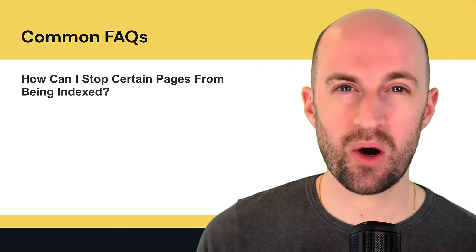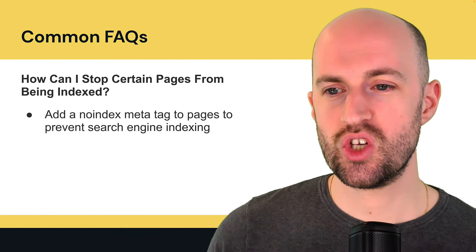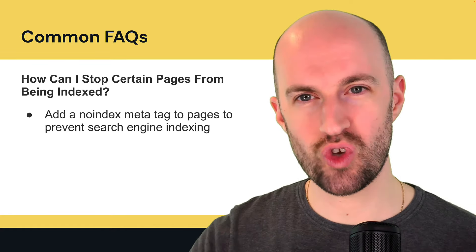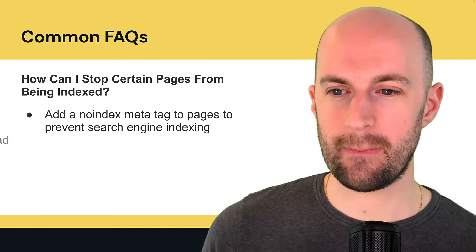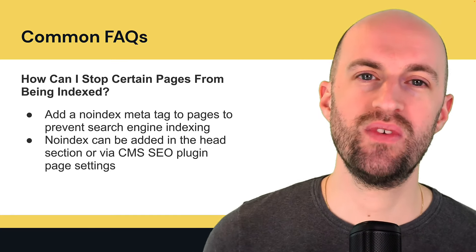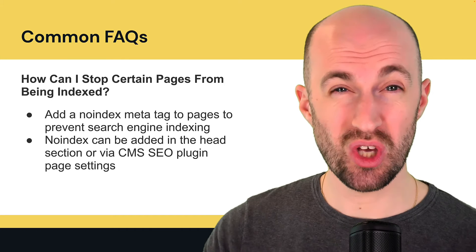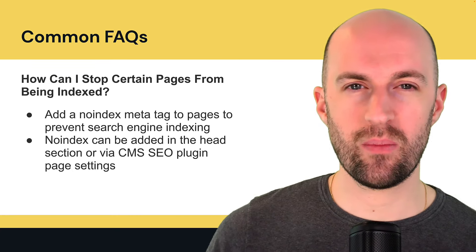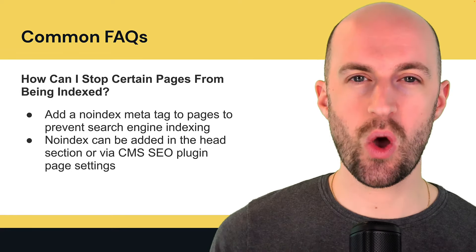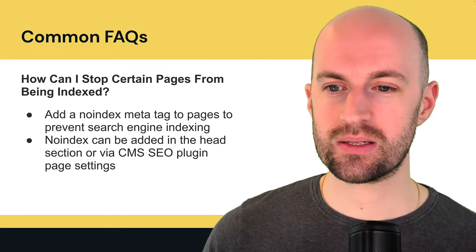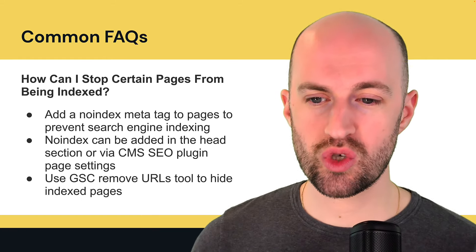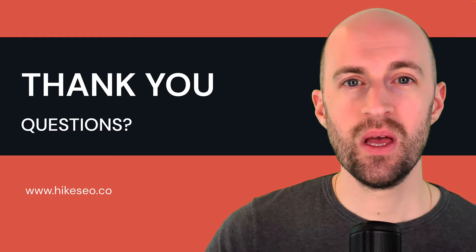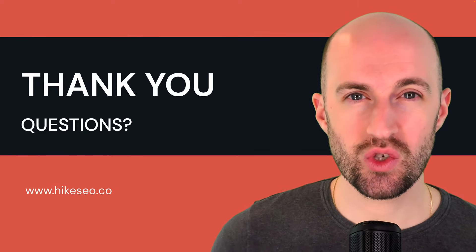How can I stop certain pages from being indexed? Add a noindex meta tag to those pages to prevent search engine indexing. This tells the search engine not to put that page in results. It can be added in the head section of the HTML or via a CMS SEO plugin page settings — such as Yoast SEO or Rank Math in WordPress. You can also use Google Search Console's Remove URLs tool to hide indexed pages.